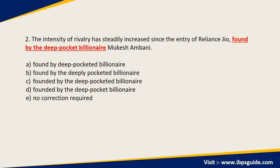Question 2: 'The intensity of rivalry has steadily increased since the entry of Reliance Jio, found by the deep pocket billionaire Mukesh Ambani.' The underlined phrase is 'found by the deep pocket billionaire'. They're saying that because of the entry of Reliance Jio in the market, there has been a lot of rivalry. Are they trying to say that he found something, or that he started the company? Here, when you look at the context, they're trying to say that he is the person who created the business — so it shouldn't be 'found', it should be 'founded', because they're saying he started the company, in the past tense. So: 'founded by the deep pocket billionaire'.